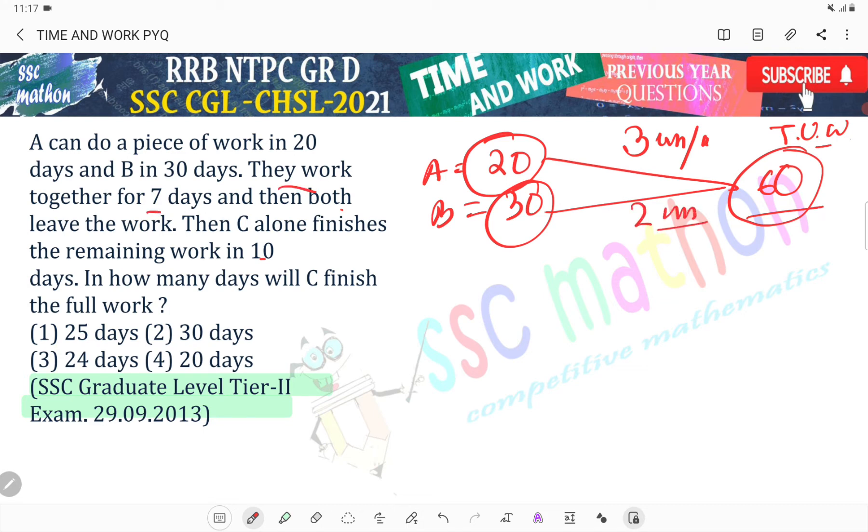They work together for 7 days. So 7 days of work, how much work? 7 into 3 plus 2 equals 35 units.